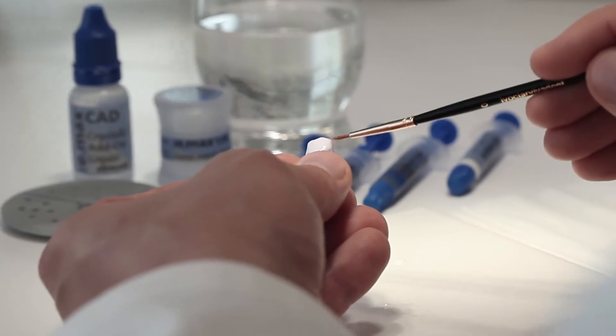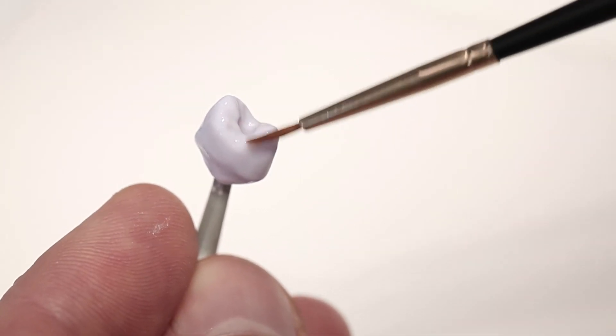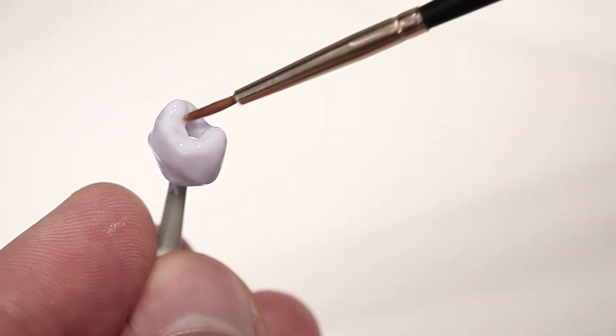Apply the glaze paste in an even coating onto the outer surfaces and the occlusal surface of the hybrid abutment crown. Make sure that no glazing material reaches the bonding surface to the tie base or the screw channel, as this may compromise the accuracy of fit.